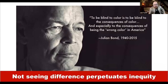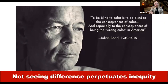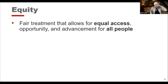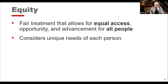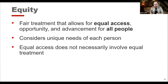The goal shouldn't be colorblindness. The goal should be to see the differences, challenge the system of oppression, and change it. In the meantime, we must provide equitable opportunities for everyone based on their differences. In the classroom, for example, you wouldn't hand all students a 12-point font handout knowing one student needs 24-point font because they're visually impaired. Equity says that student needs a different handout. Equity involves fair treatment that allows for equal access, opportunity, and advancement for all people, considering the unique needs of each person. Equal access does not necessarily involve equal treatment.